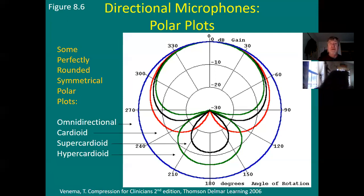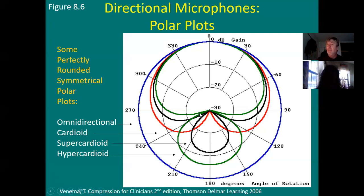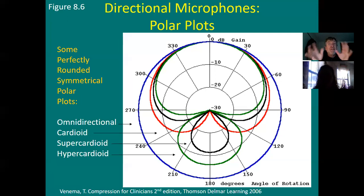The black one is called supercardioid. It's a little bit less sensitive to sounds from the sides, but it has a bubble in the back. It has two null points — where it touches minus 30 — compared to cardioid's one. These polar plots are sensitivity patterns showing how sensitive the mic is to sounds from all directions. You've got a pinch point here and a pinch point there.